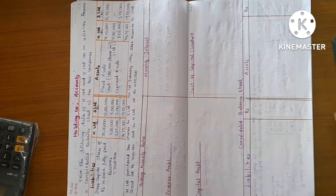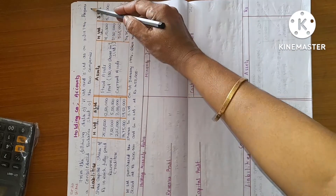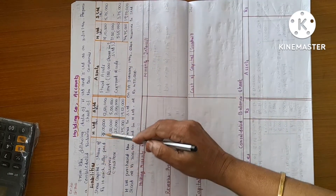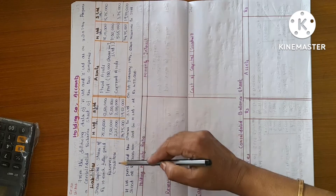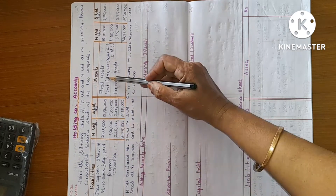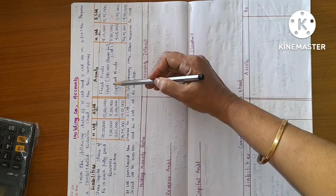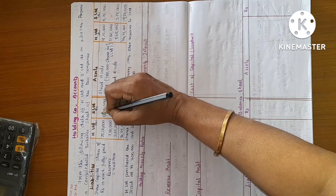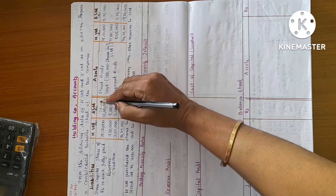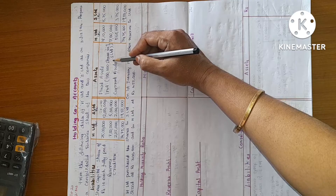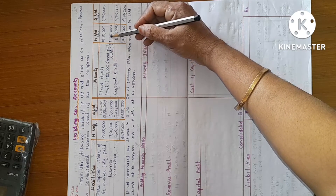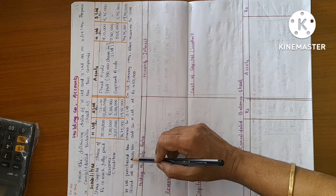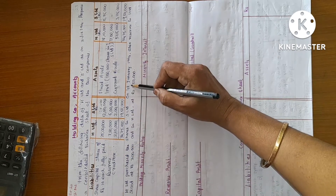From the following data of H-Limited and S-Limited as on 31st December, prepare the consolidated balance sheet of the two companies. Share capital: 25 lakh and 12 lakh 50,000. Reserves: 7 lakh 50,000. Creditors: 5 lakh, 2 lakh 25,000, and 2 lakh. Fixed assets: 18 lakh 10,000 and 15 lakh 75,000. Investment — total shares in S-Limited: 1,25,000 shares at Rs. 100 per share. H-Limited purchased 1,00,000 shares; the remaining 25,000 are held by minority holders. Current assets: 5,65,000 and 3,75,000. H-Limited purchased the shares in S-Limited on 1st January 1994.